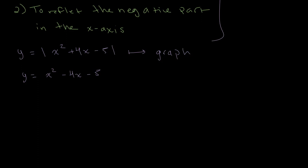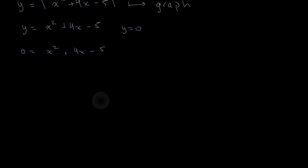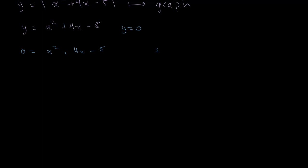First, we'll find the points of interception. It crosses the x-intercept when y equals 0. So 0 equals x squared plus 4x minus 5. We can factorize this. x squared minus x plus 5x minus 5. We get x times (x minus 1) plus 5 times (x minus 1).